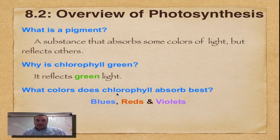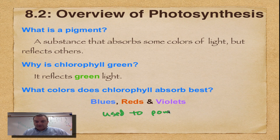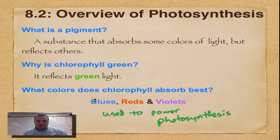What colors does chlorophyll absorb the best? Blues, reds, and violets. These colors are going to be used to power photosynthesis. We don't get any power from green because that's reflected. Most photosynthesis is going to happen in these colors: blues, reds, and violets.